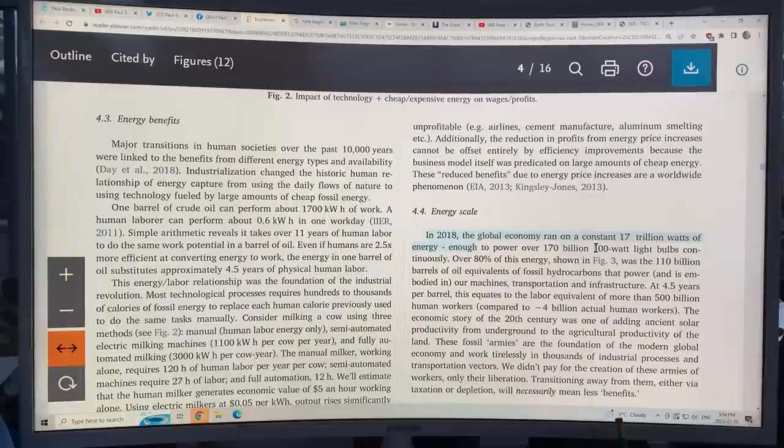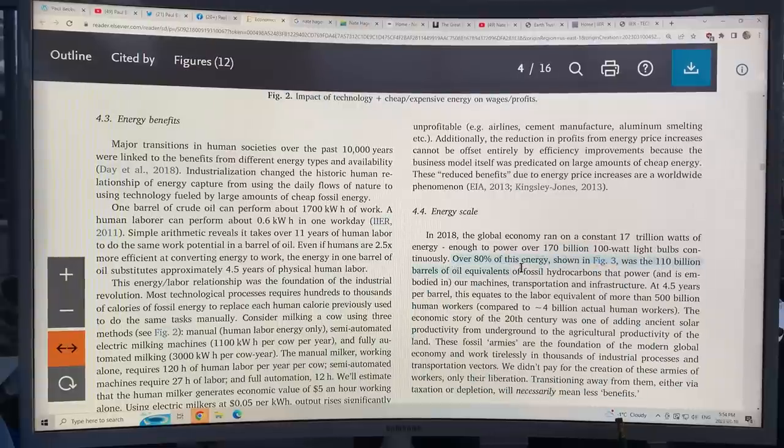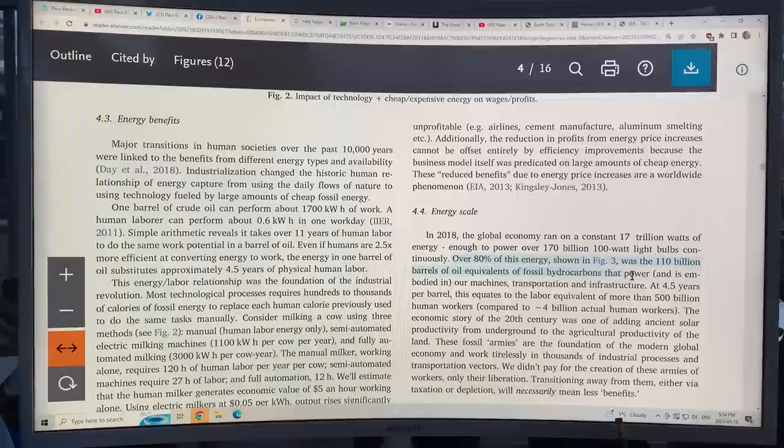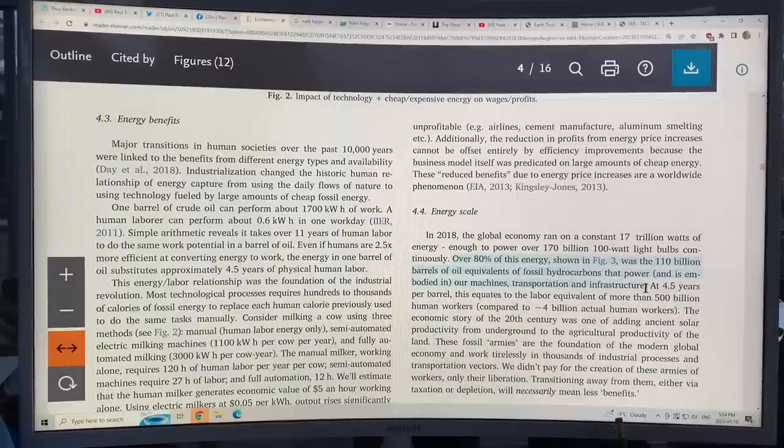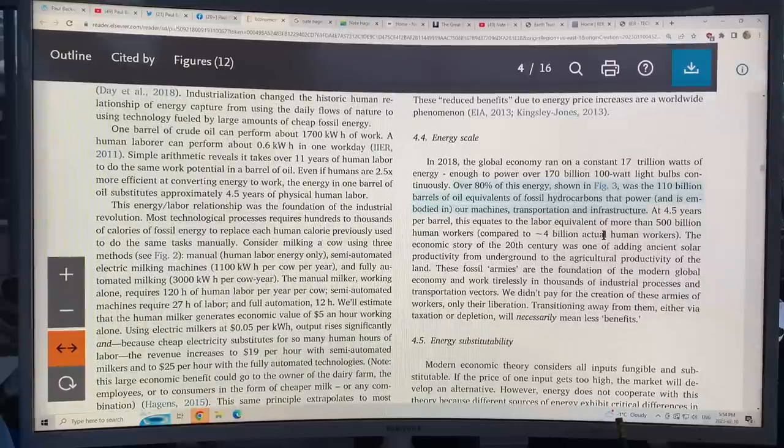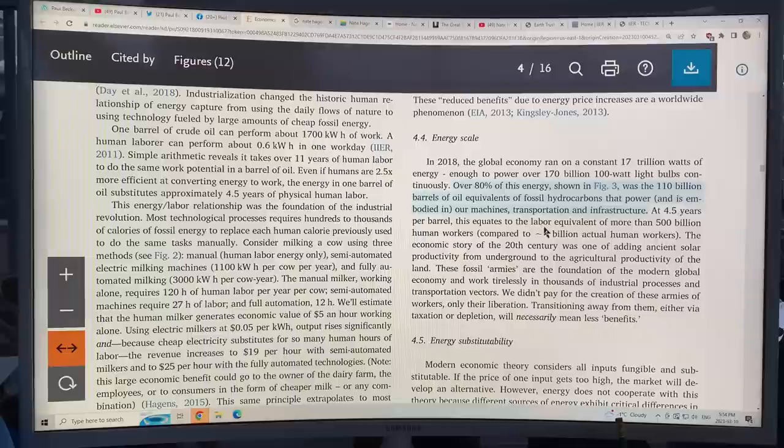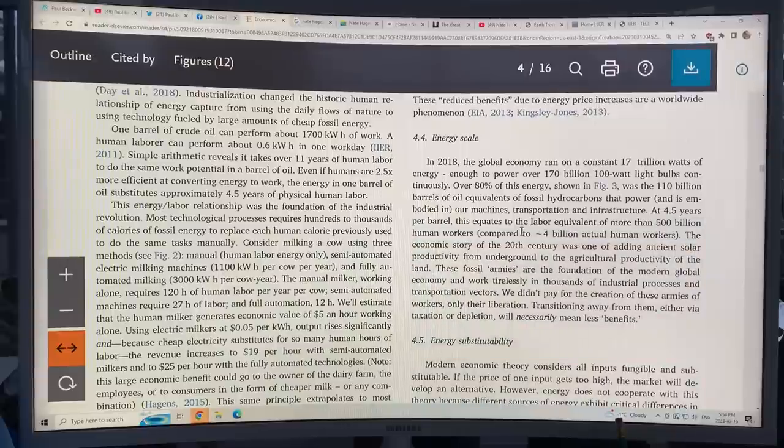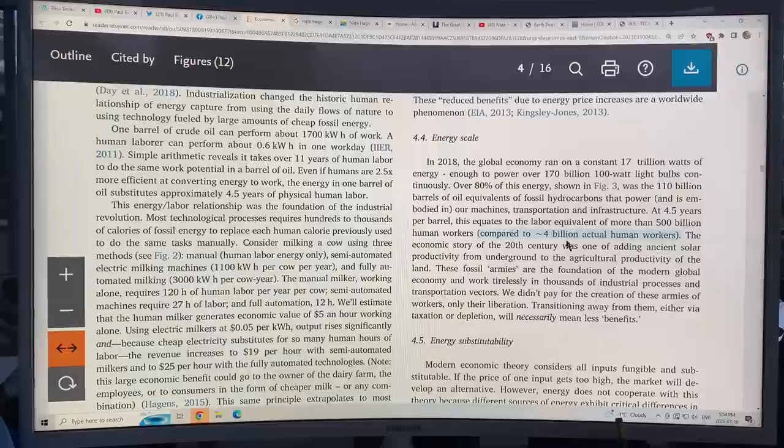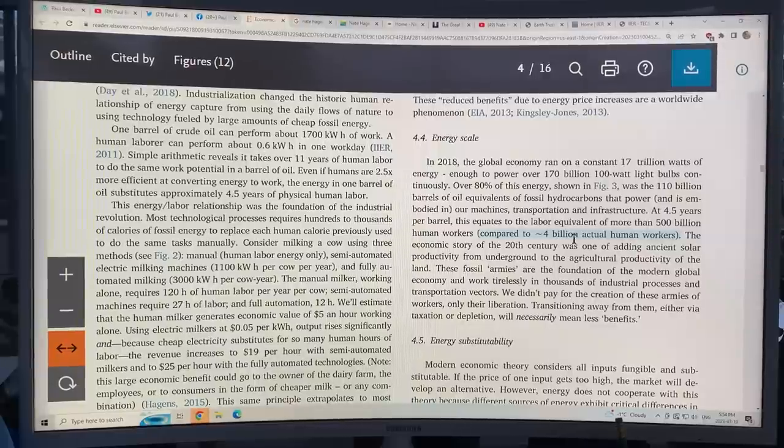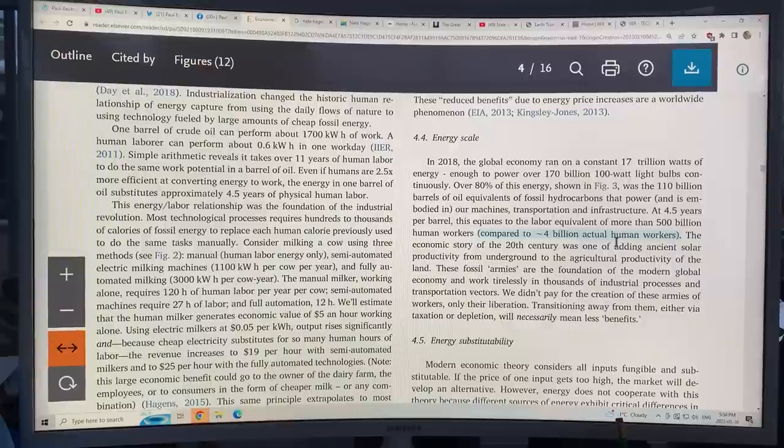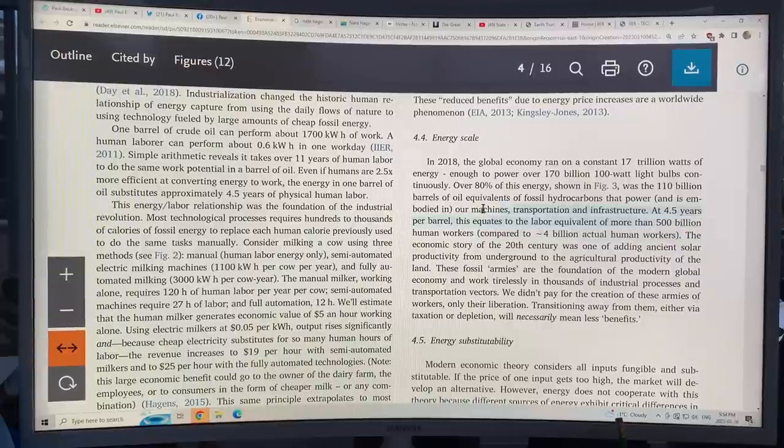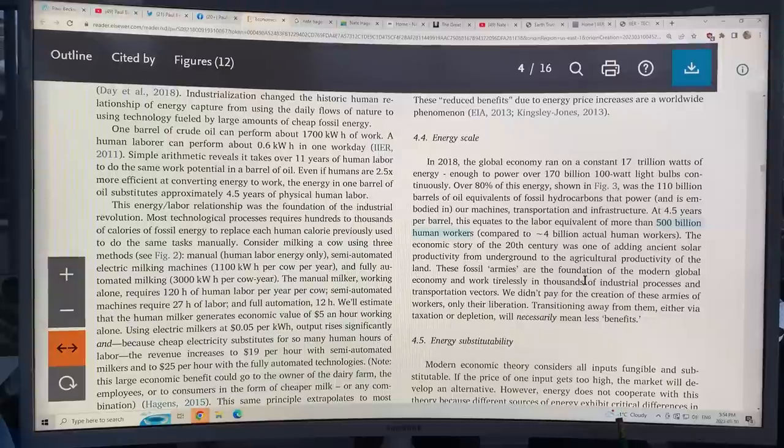In 2018, the global economy ran on a constant 17 trillion watts of energy. If you have 100 watt light bulbs, that's 170 billion 100 watt light bulbs. 80% of this energy was 110 billion barrels of oil equivalents of fossil hydrocarbons that power and are embodied in our machines, transportation and infrastructure. At 4.5 years per barrel, if it was all human labor, this equates to a labor equivalent of more than 500 billion human workers compared to 4 billion actual human workers. So there's about 8 billion on the planet now. Remember, this was back a couple years ago. There were 4 billion actual human workers roughly in 2019. But because of our fossil fuel usage, it was like we had 500 billion human workers. See the leveraging from fossil fuels, see why fossil fuels are predominant, see why it's so hard to get rid of them.